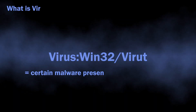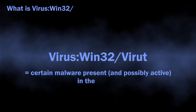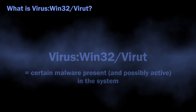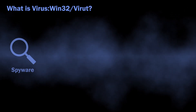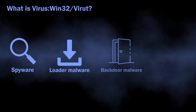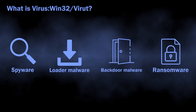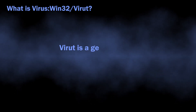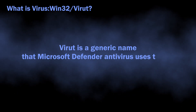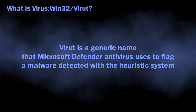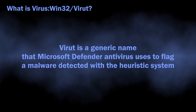In normal situations, Virus Win32 Wired can flag a wide variety of malicious programs, from loaders, spyware, and backdoors to ransomware. The name is totally generic — there is no big malware family that has such naming.